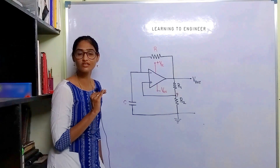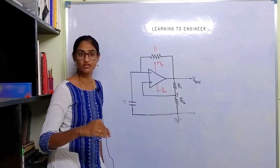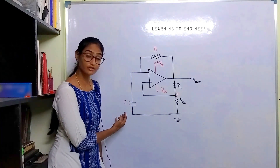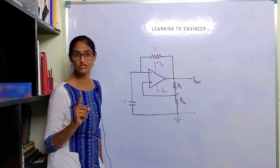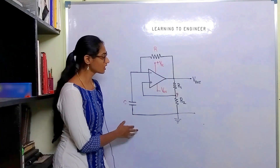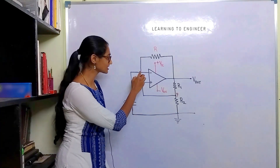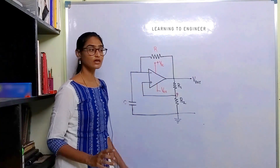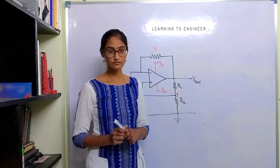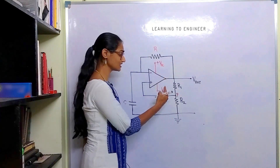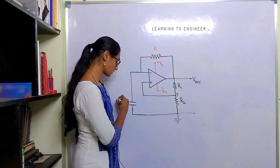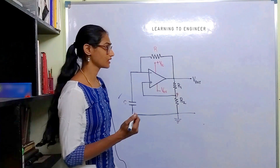In an astable multivibrator you do not have any stable state — it has to be constantly fluctuating, just like how a capacitor charges and discharges. If you want to understand the detailed operation of a capacitor you can check out the linked video. In this astable circuit we have capacitive coupling, and this charging is facilitated by the resistor. There is no signal input applied to it — the two voltage levels plus Vcc and minus Vee, the operational supplies, are sufficient to get an astable multivibrator.